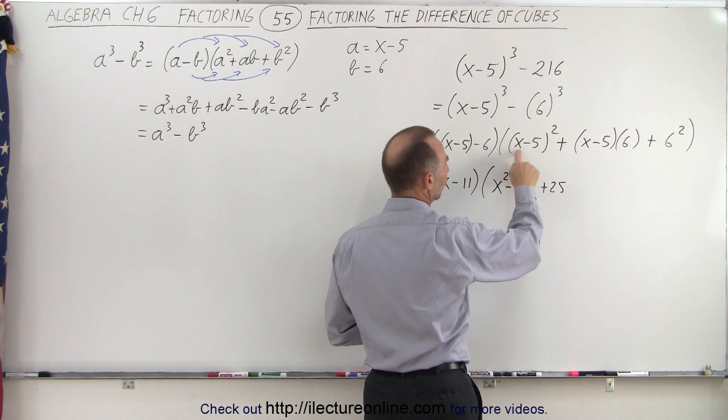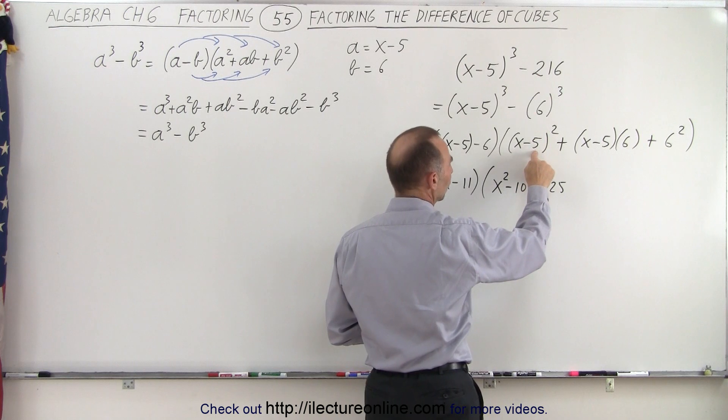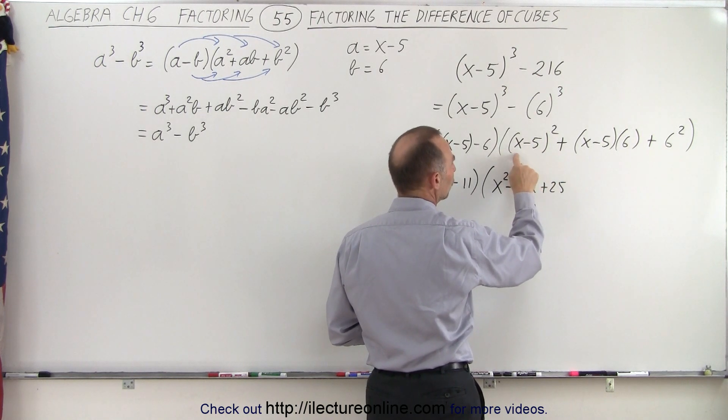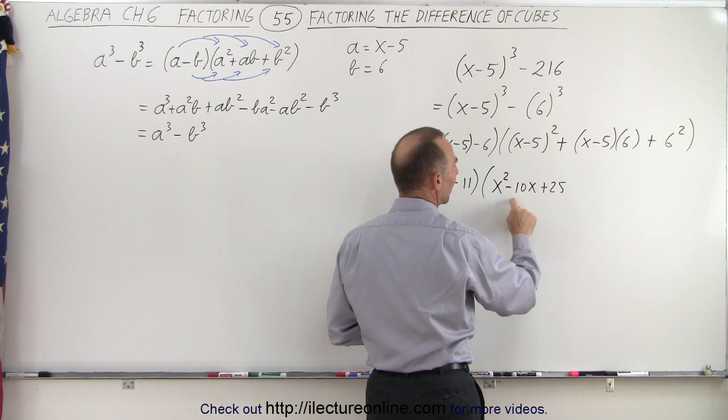The way you can do that, it's the first term squared, the last term squared, and then twice the product of the two. Two times x times minus 5 is minus 10x.